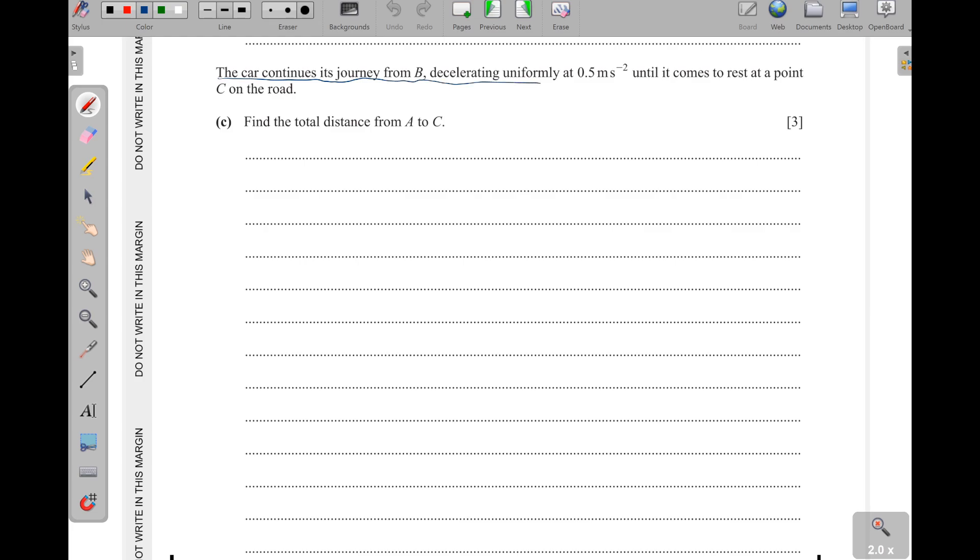The car continues its journey from B decelerating uniformly at 0.5 meters per second squared until it comes to rest at a point C on the road. Then part C, find the total distance from A to C. Now I'm going to sketch this one again. Just like we had this before. We had from 15 to 27. Then it went like this here. Then after that, it came down. And this one decelerated. Because it comes to rest, we have to bring it to zero.